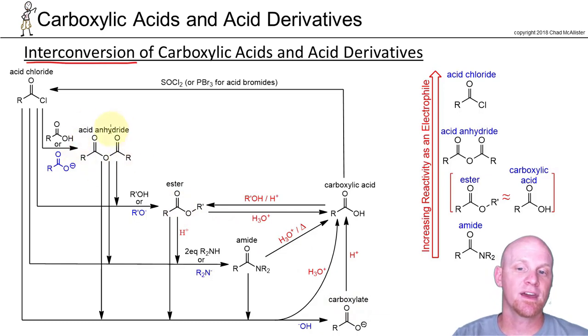If you look at the anhydride, the second most reactive, you can turn it into anything except not the acid chloride. The acid chloride is more reactive, all the rest are less reactive. The general principle is that you can turn any more reactive carboxylic acid derivative into a less reactive one.